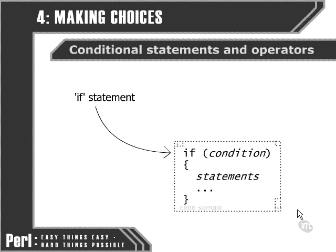The basic building block which we use to construct a conditional statement is the if statement. The if statement syntax is roughly like this. We use the if keyword here, then in a pair of normal brackets, or parentheses, we put a condition. We're going to look at how to build one of those conditions in just a moment. If the condition is true, then these statements, whatever they are, need to be carried out. We're able to mark out exactly which statements are dependent on the condition being true by using these two curly brackets here.